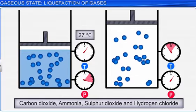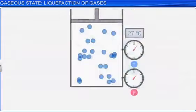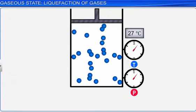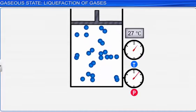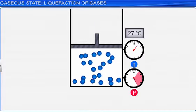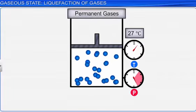There are some gases, however, which cannot be liquefied at room temperature, even at very high pressure. These gases are called permanent gases. Hydrogen, helium and oxygen are examples of permanent gases.